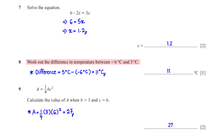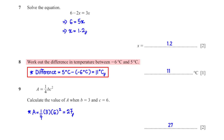Work out the difference in temperature between negative 6 degrees Celsius and 5 degrees Celsius. The difference equals the higher temperature, which is 5 degrees Celsius, minus the lower temperature, which is negative 6 degrees Celsius. This gives us 11 degrees Celsius.